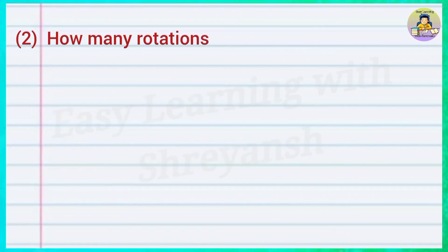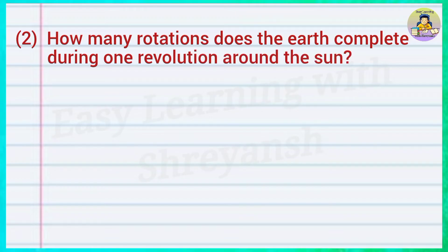Question 2: How many rotations does the Earth complete during one revolution around the Sun? Answer: Earth makes 365 complete rotations and one quarter rotation.